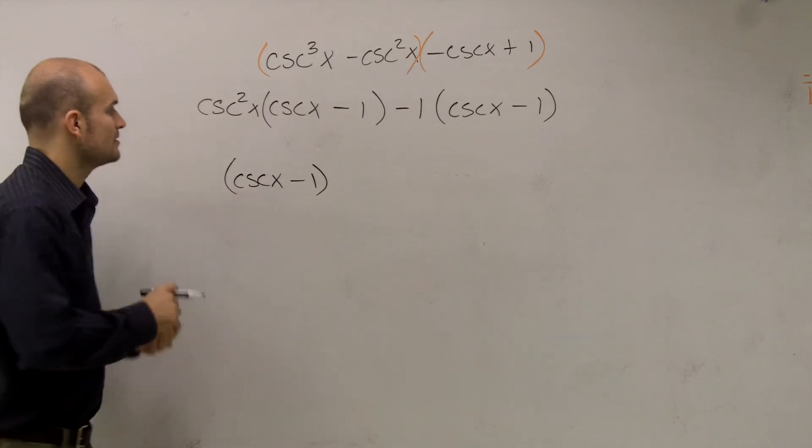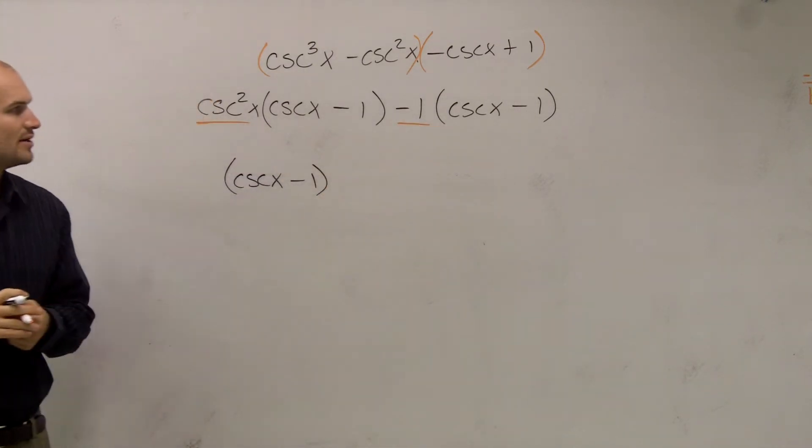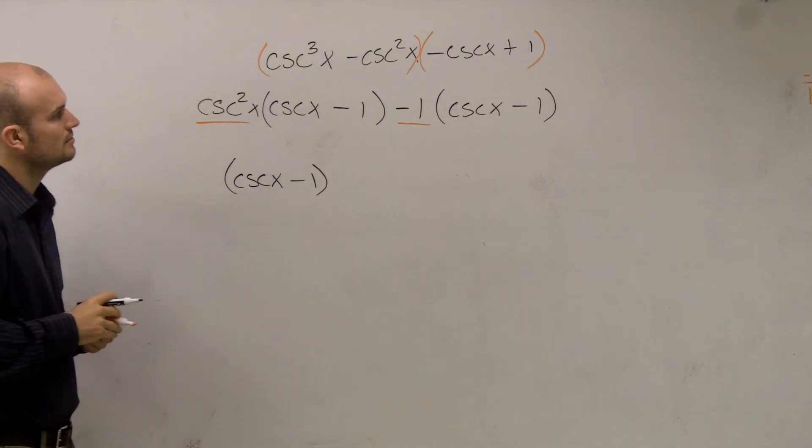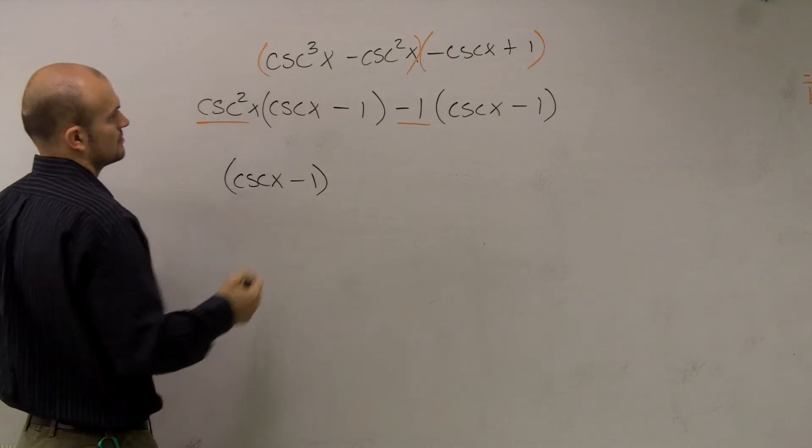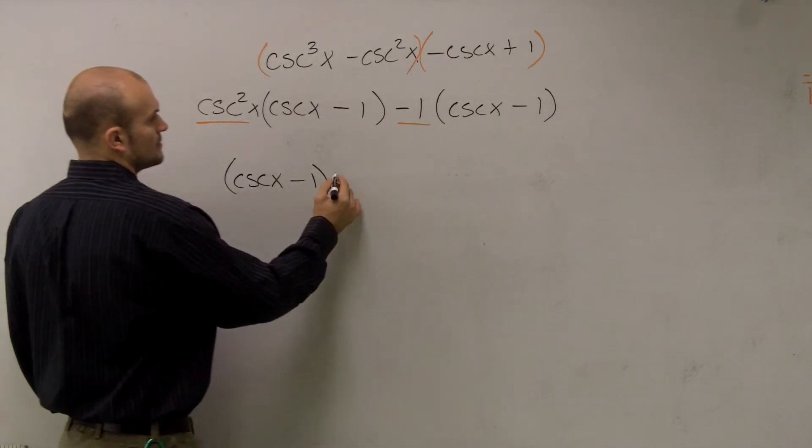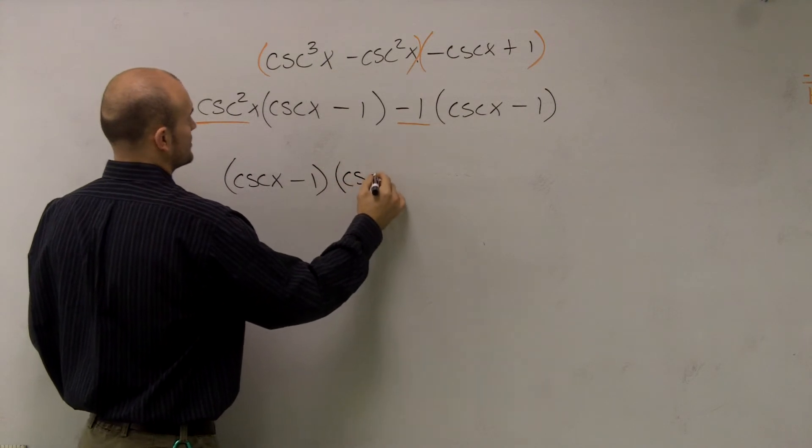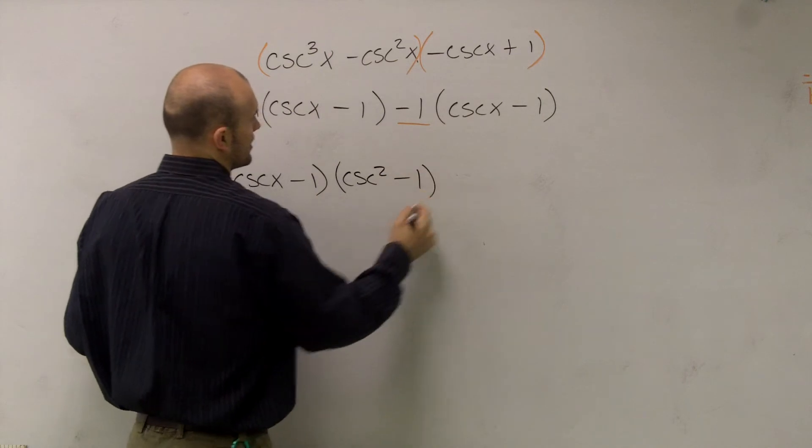And what I'll be left with is a cosecant squared of x minus 1. So just make sure I didn't make a mistake. Cosecant squared minus 1. Okay.